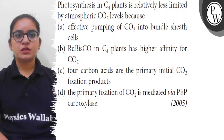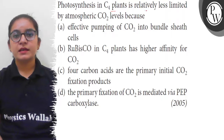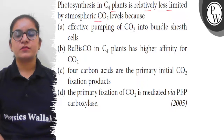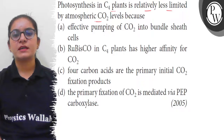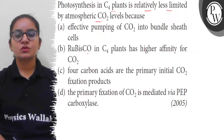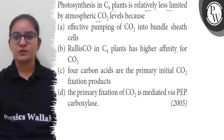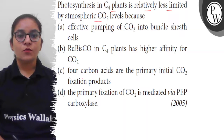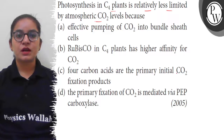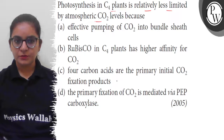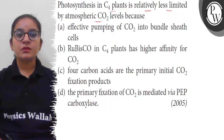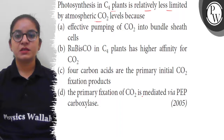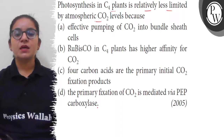Hello students. The question is: photosynthesis in C4 plants is relatively less limited by atmospheric carbon dioxide level because — a. effective pumping of carbon dioxide in bundle sheath cells; b. RuBisCO in C4 plants have higher affinity for carbon dioxide; c. 4-carbon acids are the primary initial carbon dioxide fixation product; d. the primary fixation of carbon dioxide is mediated via PEP carboxylase.